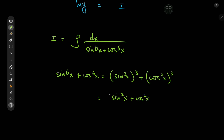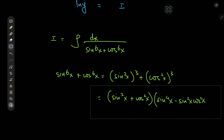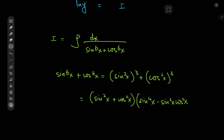Times a² minus ab plus b² — so that's (sin²x + cos²x) times (sin⁴x minus sin²x·cos²x plus cos⁴x). Let me write that out here.